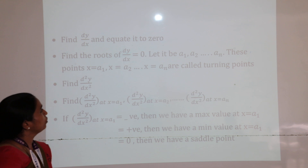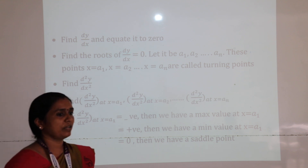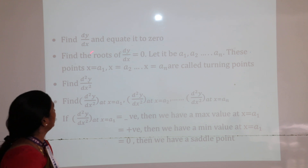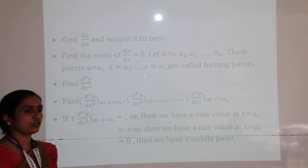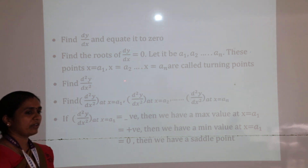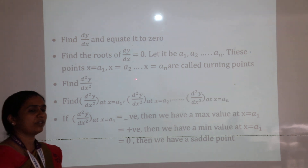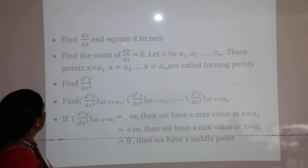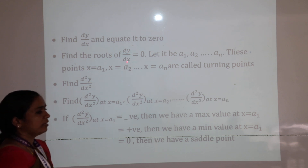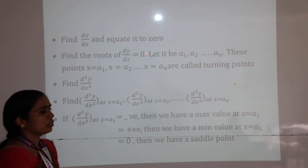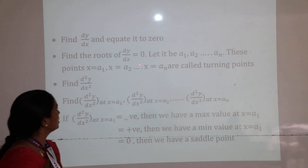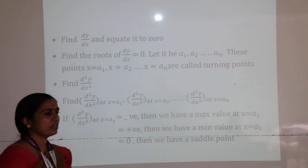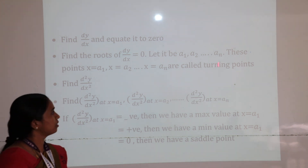Now we are going to see the working rule for finding the maximum and minimum. First, find dy/dx and equate it equal to 0, because at the stationary point the value of dy/dx, i.e., the gradient, is equal to 0. Then the next step is to find the roots of the equation dy/dx = 0. We consider the roots to be a₁, a₂, etc. These points are called stationary points.